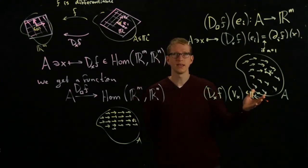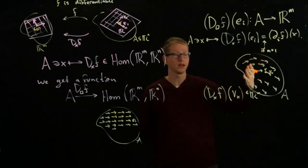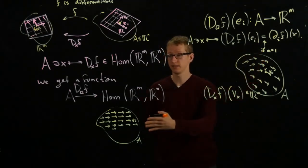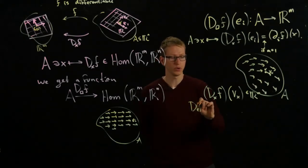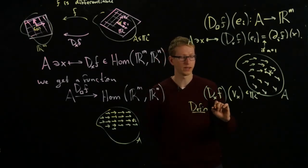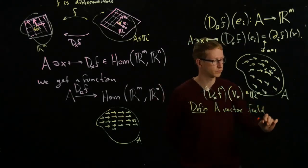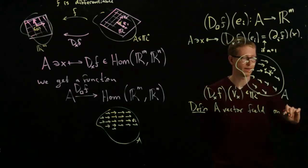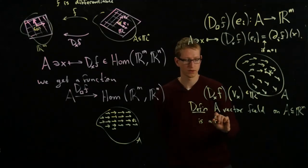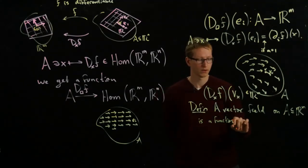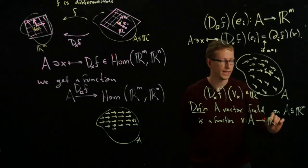This is an example of a vector field. And a special case of a vector field is exactly this straight, constant vector field here. And it motivates the definition that a vector field on a subset A of R^n is just a function of the form V from A to R^n.